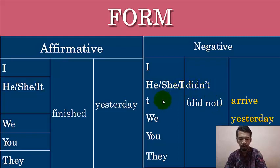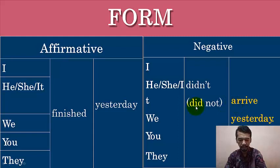We can shorten 'did not' to 'didn't' — they are the same. So the negative form becomes: 'I did not arrive yesterday.' In Bahasa Indonesia, after the subject, we just add 'did' plus 'not,' or we can shorten it to 'didn't.' Is that clear so far?